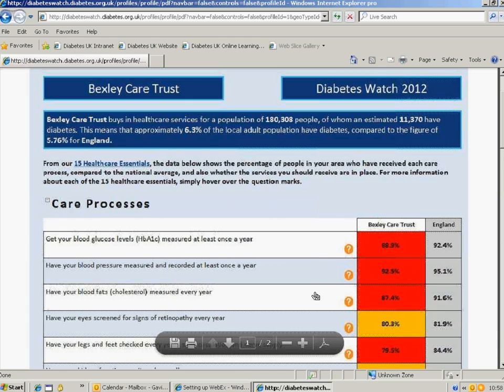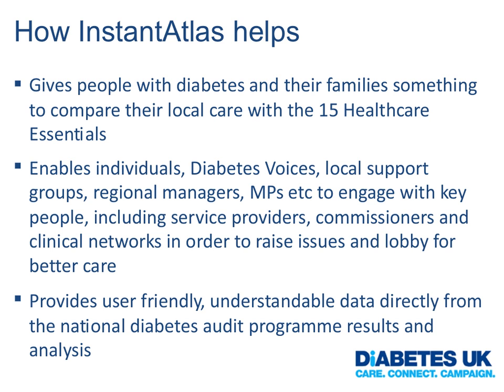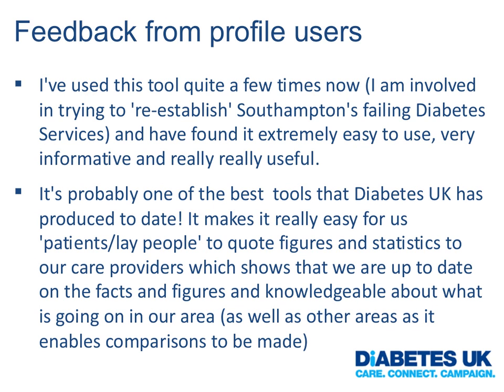Going back to my presentation: the tool essentially gives people with diabetes and their families something they can use to compare their local care. We've also been able to use it in lobbying to produce constituency-specific reports, which we've given to MPs and engaged with them in lobbying exercises to raise issues. Some of the feedback we've received is directly from people in Diabetes Voices who have taken it in — they found it extremely easy to use, informative and useful. It's made it really easy for people to quote the figures and actually get some dialogue going with their local commissioners about the services that need to be in place and where the areas of variability are.